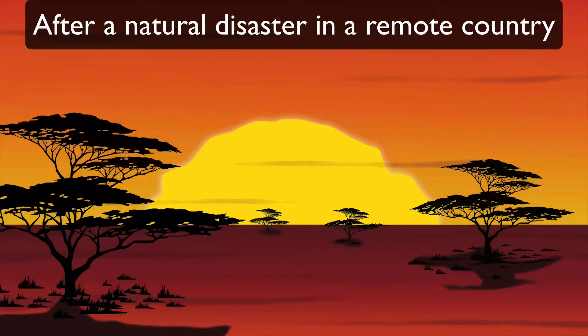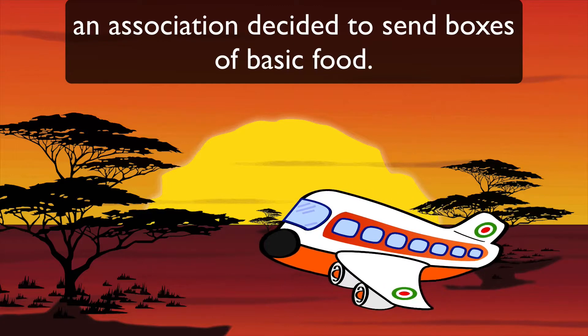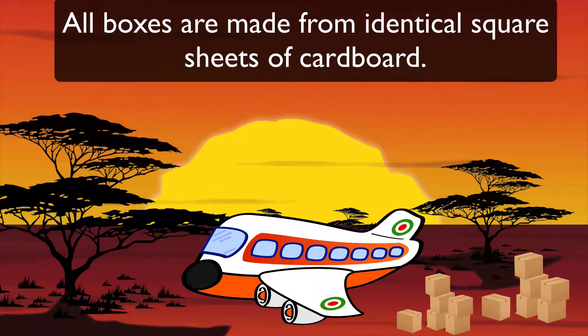After a natural disaster in a remote country, an association decided to send boxes of basic food. All boxes are made from identical square sheets of cardboard.